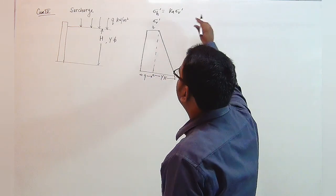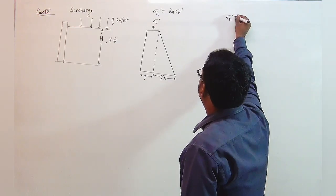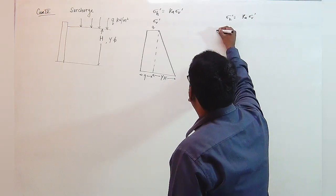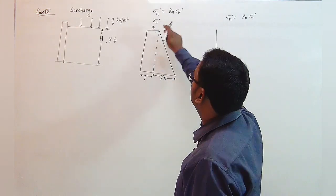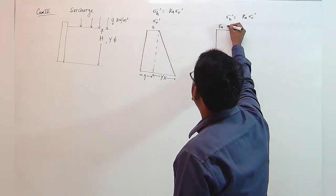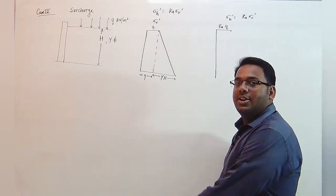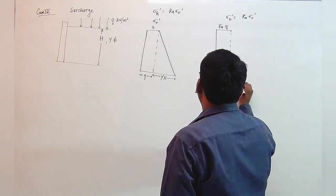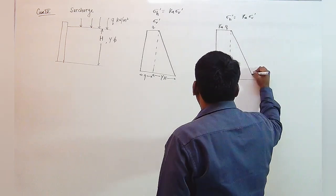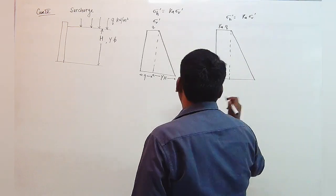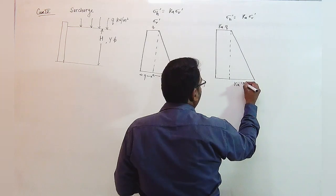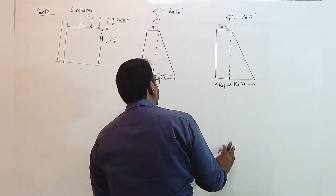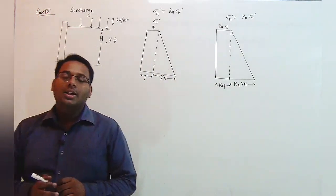This is the diagram for the effective stress. We can easily calculate the horizontal stress diagram, which equals Ka · σv'. At the top, the vertical stress is q, so we multiply Ka · q — this is the earth pressure at the top. The value Ka · q remains constant as we move down, but the effective stress increases by gamma · h, so the horizontal stress also increases by Ka · gamma · h. The total value equals Ka · q plus Ka · gamma · h, giving the earth pressure diagram for this case.